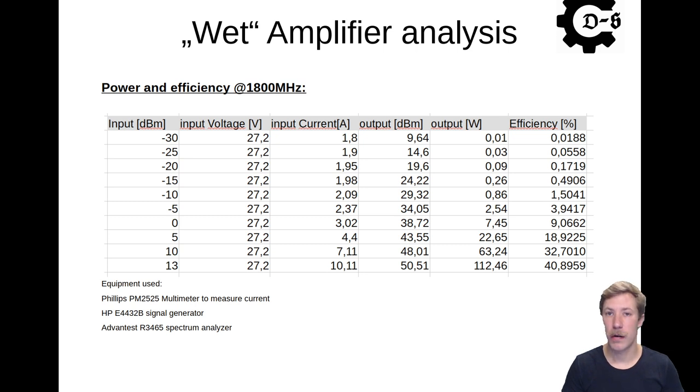On the input from minus 30 to 13 dB, we can see that the output power also goes from 0 up to 112 Watt and the efficiency only goes up to 40%. So that is of course much slower than expected.